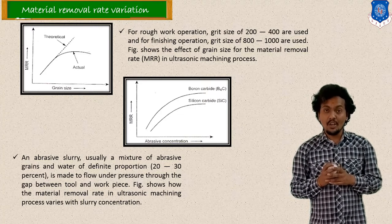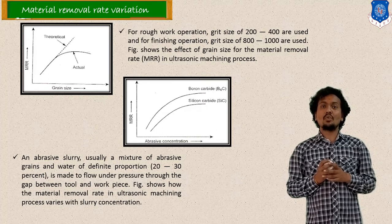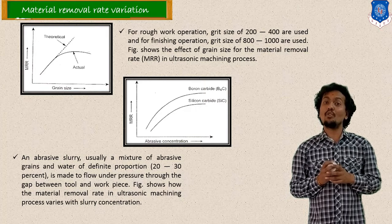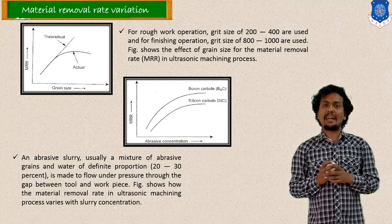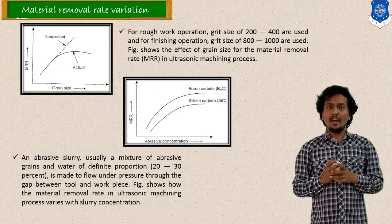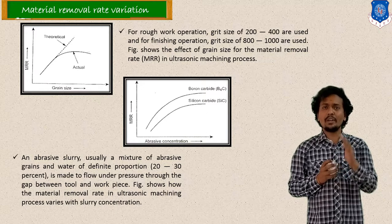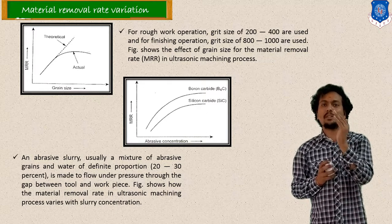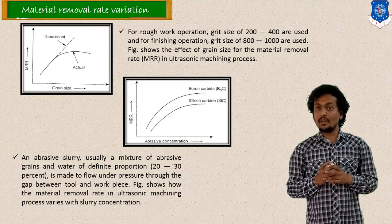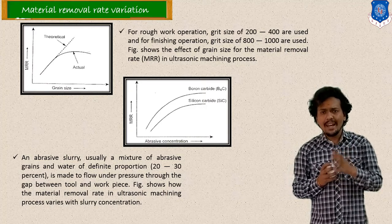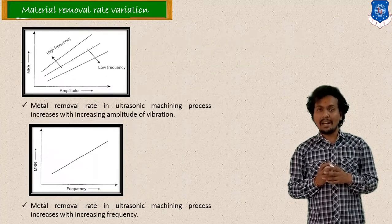After that, here I mentioned the variation with abrasive concentration or say slurry concentration. So concentration is nothing but how much amount of abrasive particles you are adding in the water or various carriers. So here I mentioned the variation of material removal rate with your slurry concentration. So it will increase fast but after that there will be some stable limit, and after that it will decrease with higher concentration. So generally 20 to 30 percentage of your slurry concentration is recommendable.